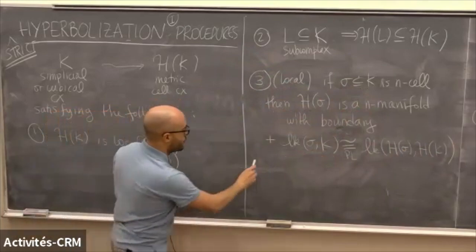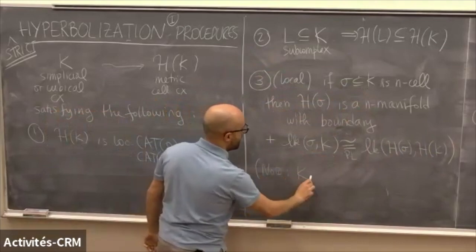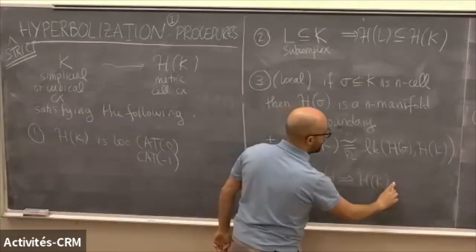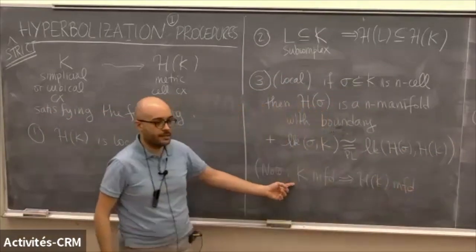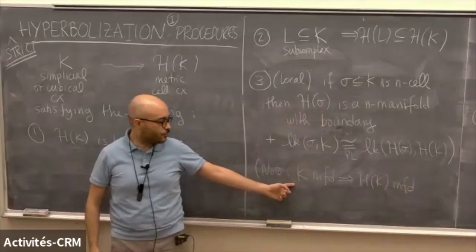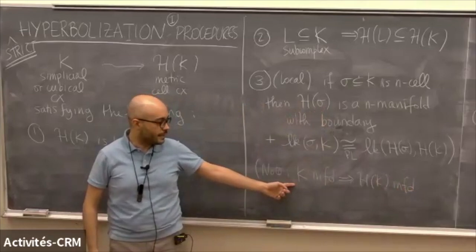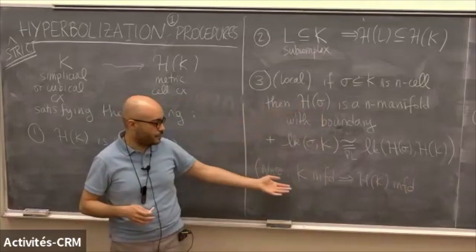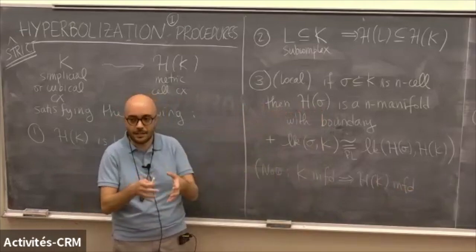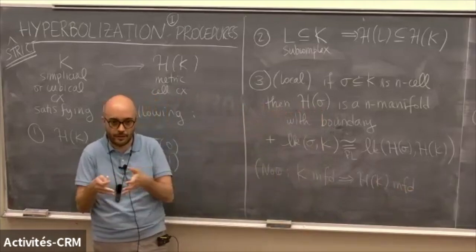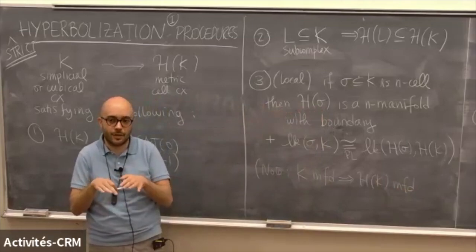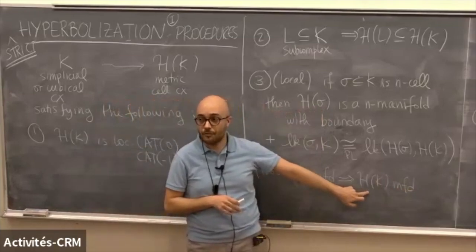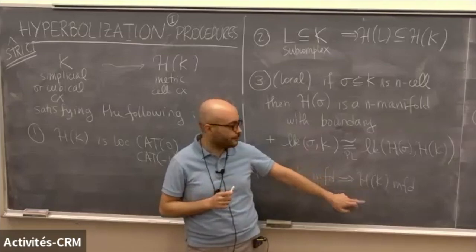A consequence of axiom three is that if K is a manifold, then H(K) is also a manifold. Think of K as a triangulation of a manifold — you take a copy of a manifold with boundary, one for each simplex, and glue them together in a pattern specified by K. Inside each cell you're a manifold with boundary, so interior points are manifold points. When these cells come together, if they're not coming together in a crazy way in K, they're not doing so after hyperbolization — no branching.